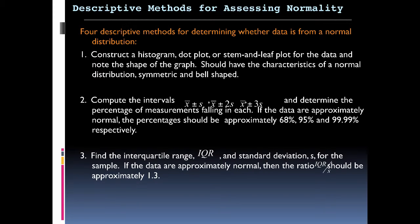When we have a histogram or a dot plot or a stem and leaf plot for data, we want to look for characteristics of normal distribution, such as a symmetric bell-shaped curve. That's what we should be seeing if we've got normal distributions.